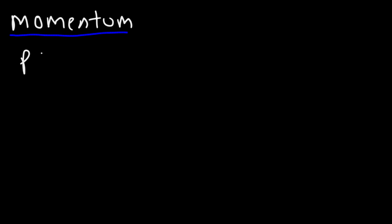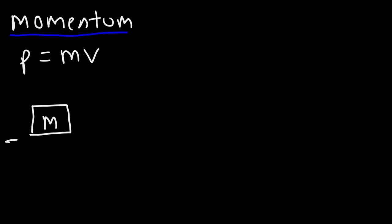Perhaps you've learned about this already. Linear momentum is basically the product of an object's mass times its velocity. It's represented by the Greek symbol rho. So if you have an object of mass m and it's moving, which means it has velocity, then the object has momentum. Momentum is simply mass times velocity — it's mass in motion. So anything that moves has momentum.